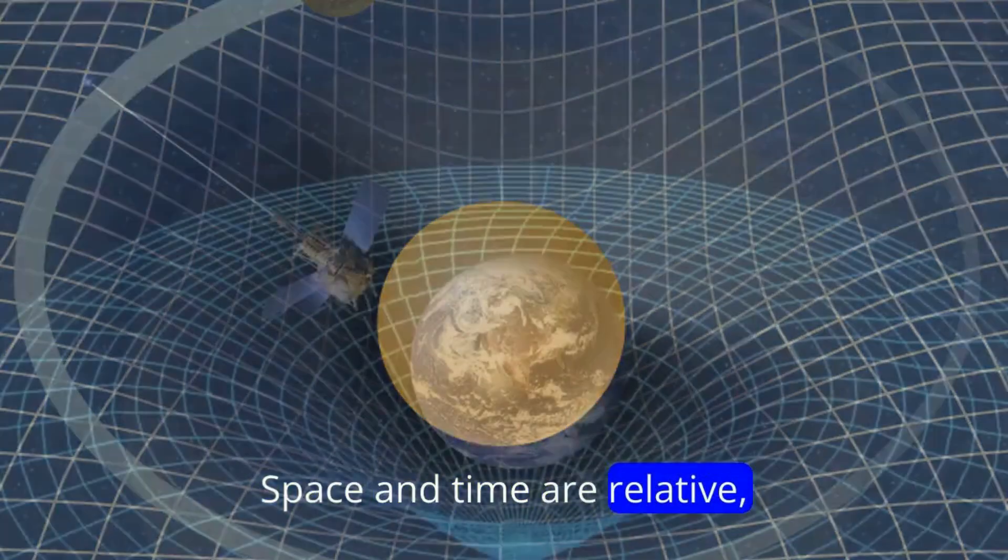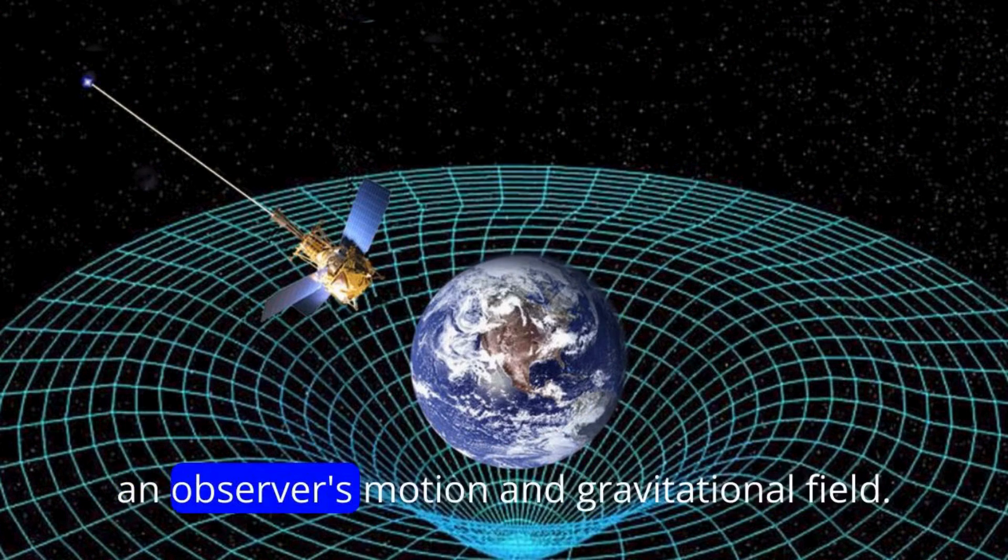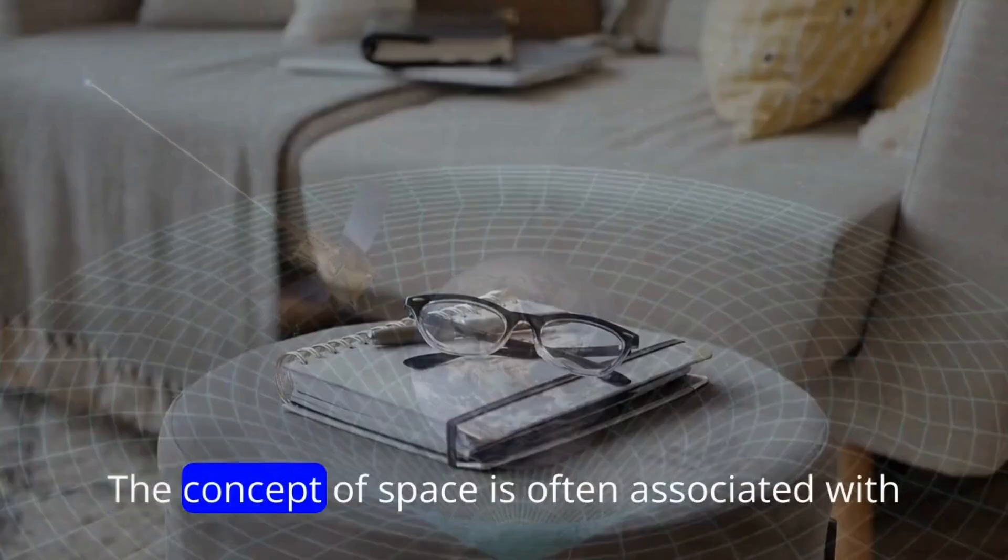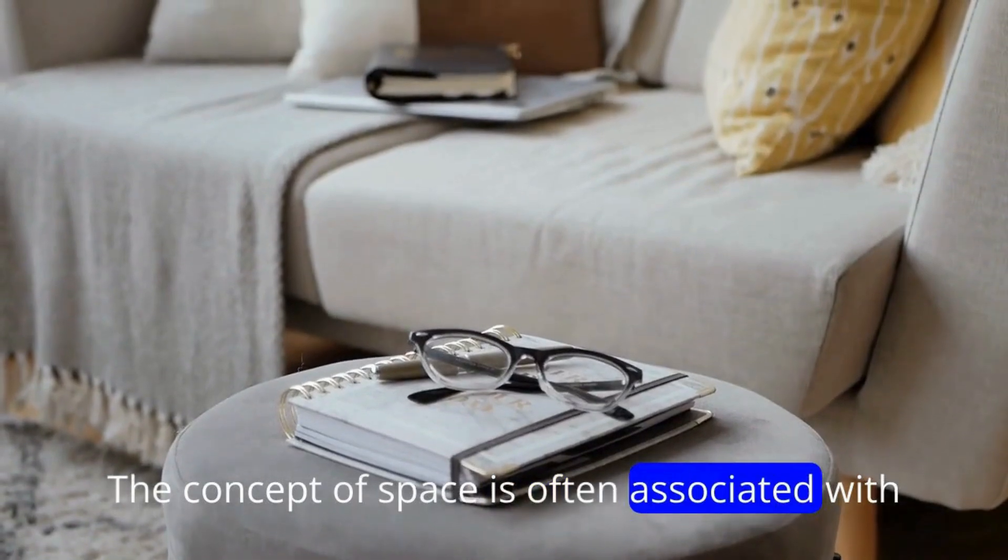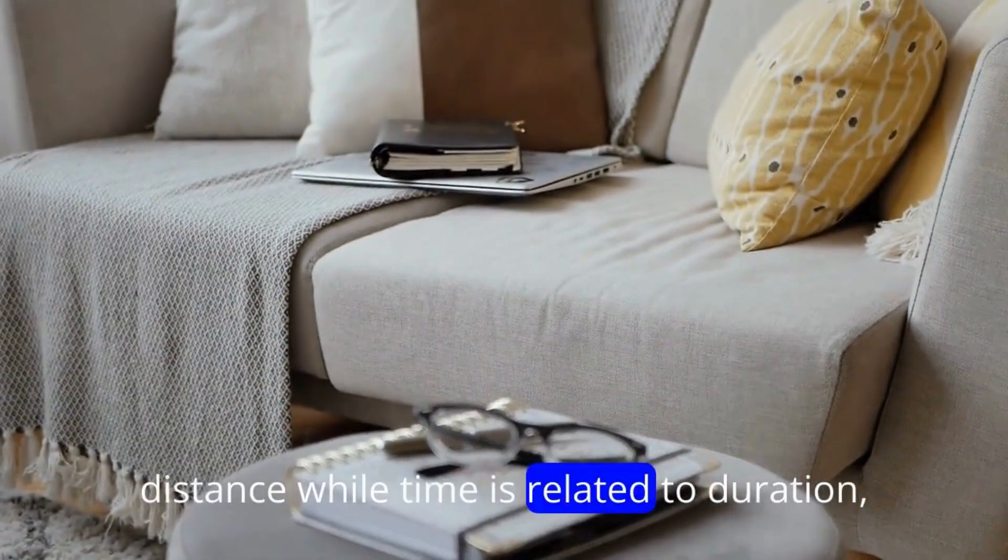Space and time are relative, meaning they can vary depending on an observer's motion and gravitational field. The concept of space is often associated with distance, while time is related to duration.